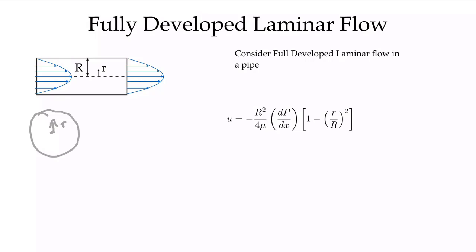Now we can solve this problem in a number of ways. One way would be to take the Navier-Stokes equations in cylindrical coordinates and do exactly what we did in module 3, and solve for the velocity profile in this geometry. If we do that, we would get this equation for the velocity profile. The local velocity as a function of r is quadratic in the radius — it's quadratic.